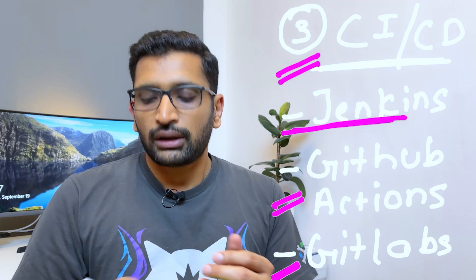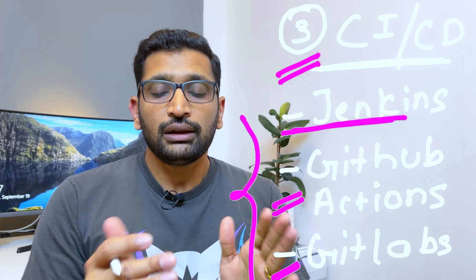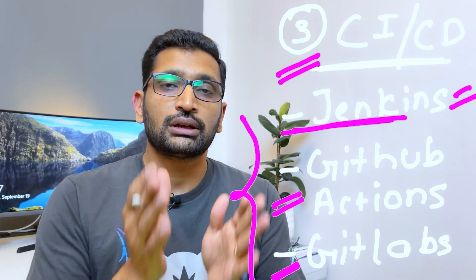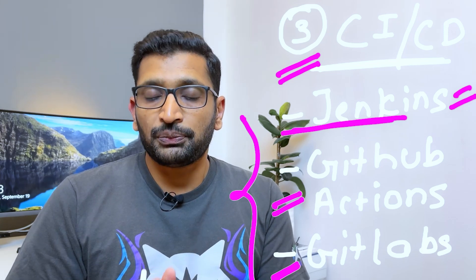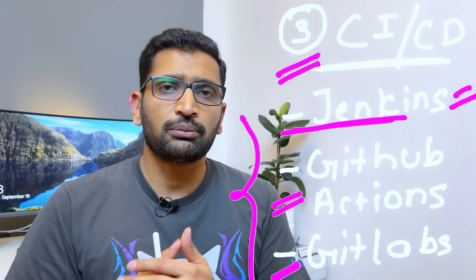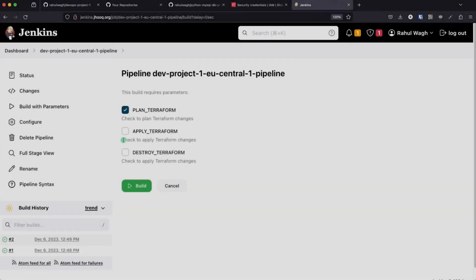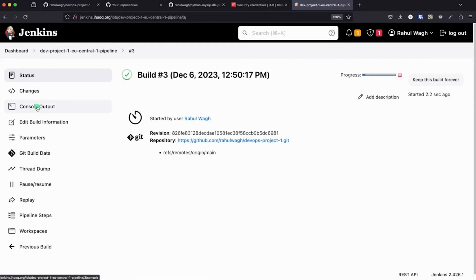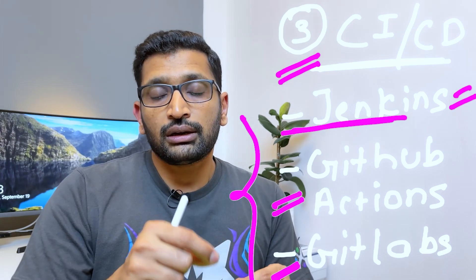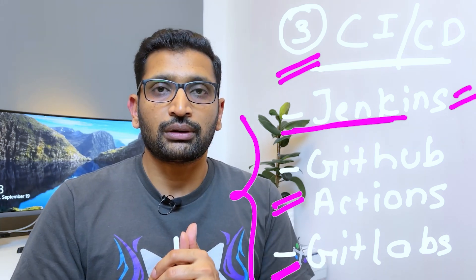If you're wondering which CI/CD tool to start with, I would highly recommend Jenkins, which is open-source and can be installed even without a cloud account — you can practice it on your local system. I've already uploaded a project on my YouTube channel showing how I set up Jenkins, installed it, and created a delivery pipeline so that once I commit code, the pipeline executes automatically. I'll put the link in the description section.